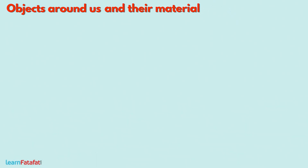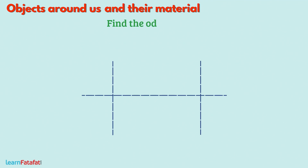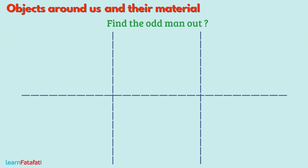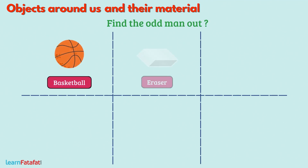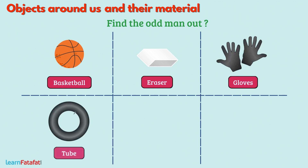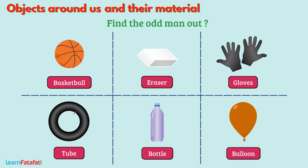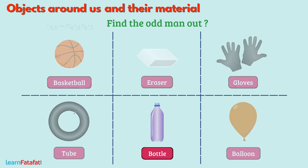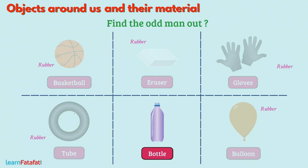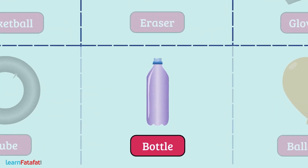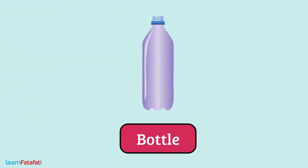To test your knowledge, here is a question. Find the odd one out from the given examples: basketball, eraser, gloves, tube, bottle, balloon. The answer is bottle. We use the material called rubber for making all the things except the bottle. For the bottle, we use plastic or glass material.